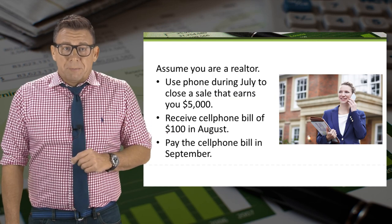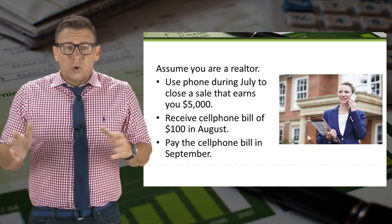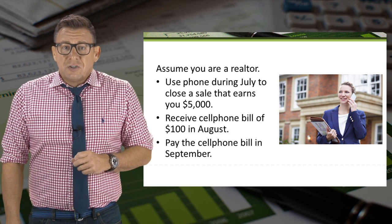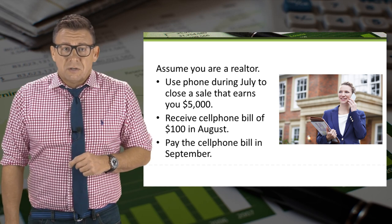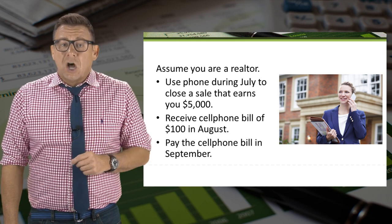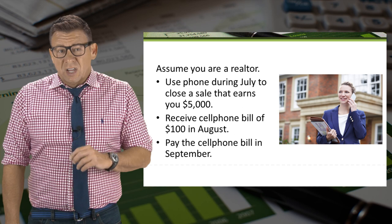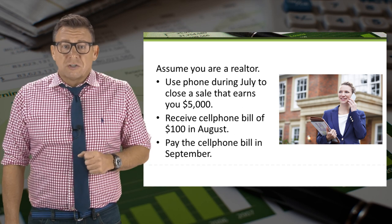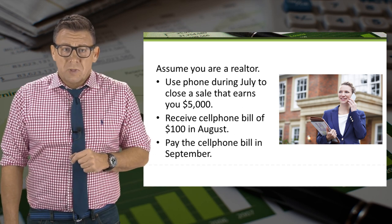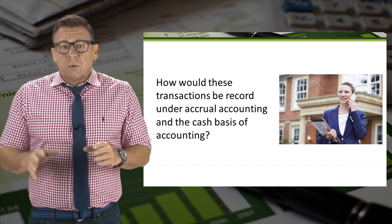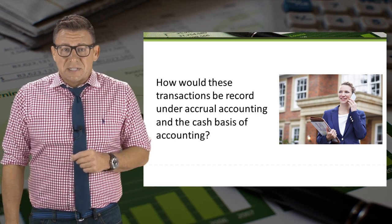Let's look at an example. Assume you are a realtor. You talk on the phone all during the month of July to close a sale that earns you $5,000. You get paid in August. You receive July's cell phone bill of $100 in August, and you pay that bill in September.